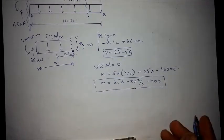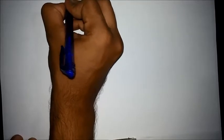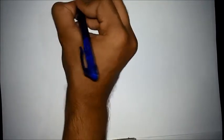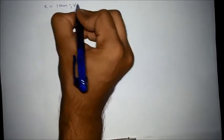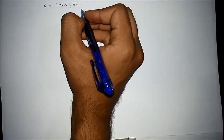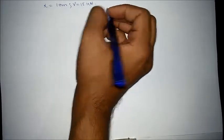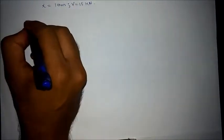Now for the shear force diagram, we plug in the values. Using the equation V equals 65 minus 5x, at x equals 0 we get a shear value of 65 kilonewtons, and at x equals 10 meters we get a shear value of 15 kilonewtons.